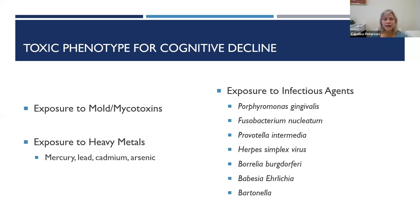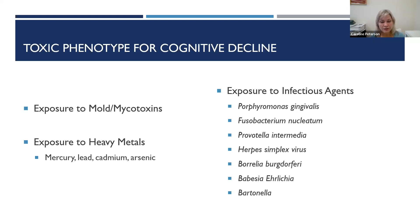And then the final one — the final of the three phenotypes — is the toxic phenotype that causes cognitive decline. This could be because of exposure to mold or mycotoxins, heavy metals, or a number of different infectious agents that undermine the quality of the brain.